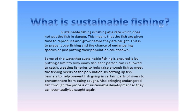What is sustainable fishing? Sustainable fishing is fishing at a rate which does not put fish in danger. Fish are given time to reproduce and grow before they are caught, preventing overfishing and the endangerment of species. Some ways sustainable fishing is ensured: putting a limit on how many fish each person is allowed to catch; creating fisheries to raise enough fish to meet population needs; setting up fish barriers to prevent fish from going into certain parts of rivers where they'd be caught; and bringing endangered fish through sustainable development so they can eventually be caught again.